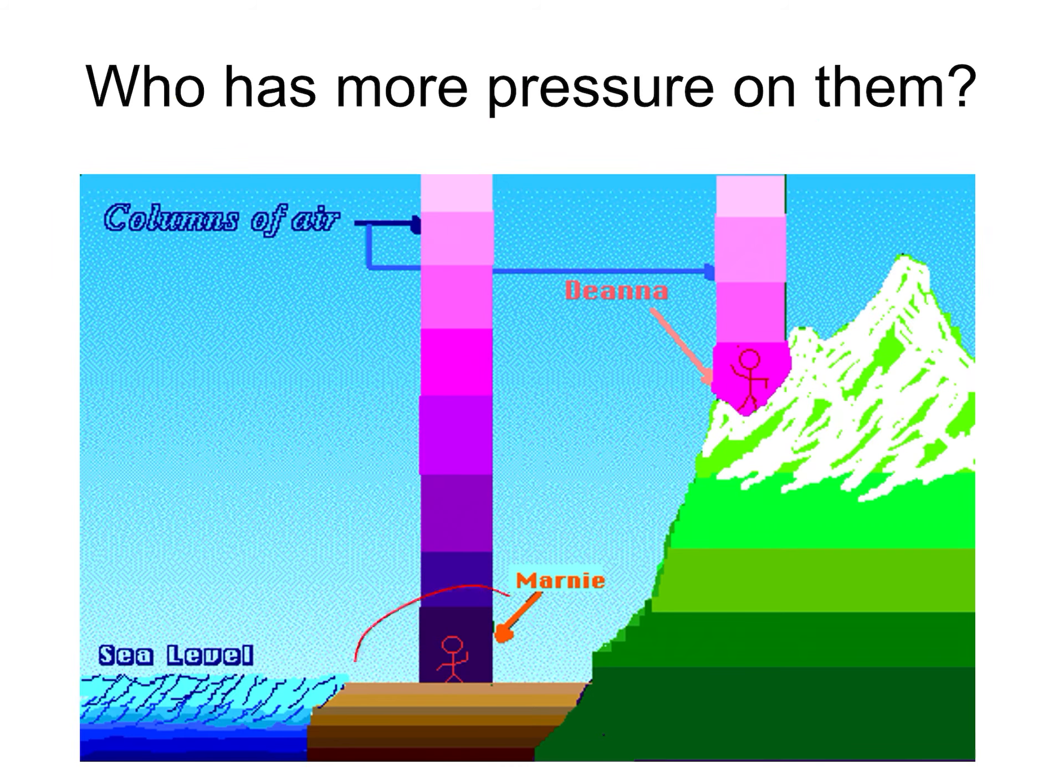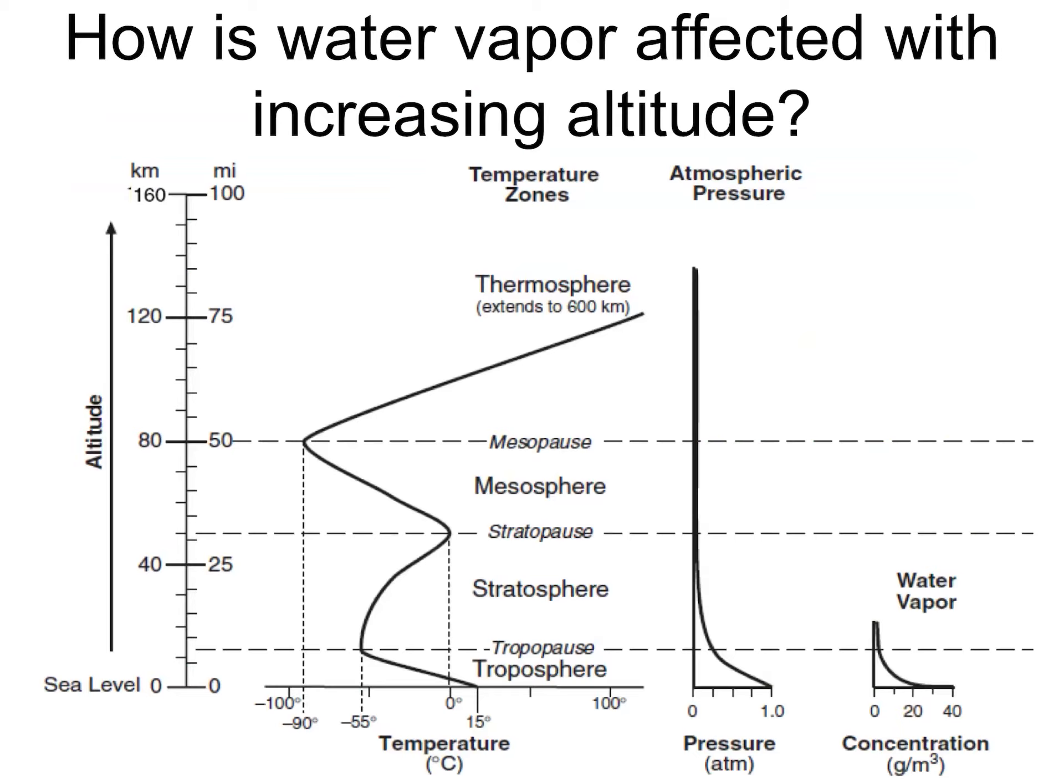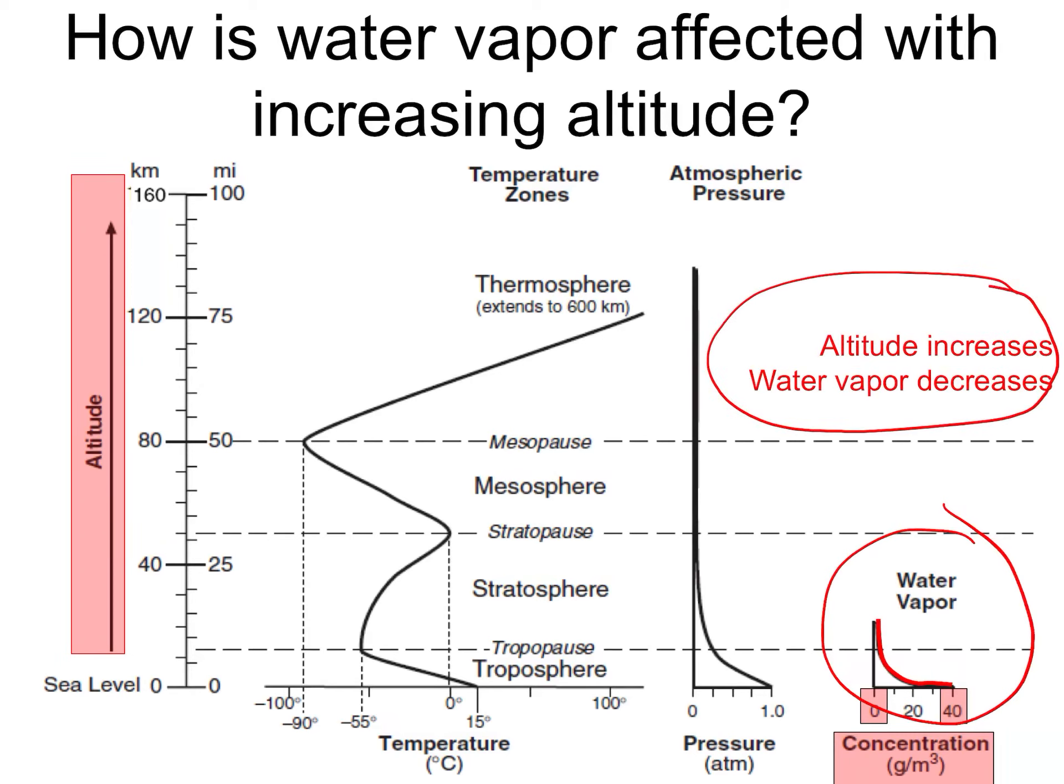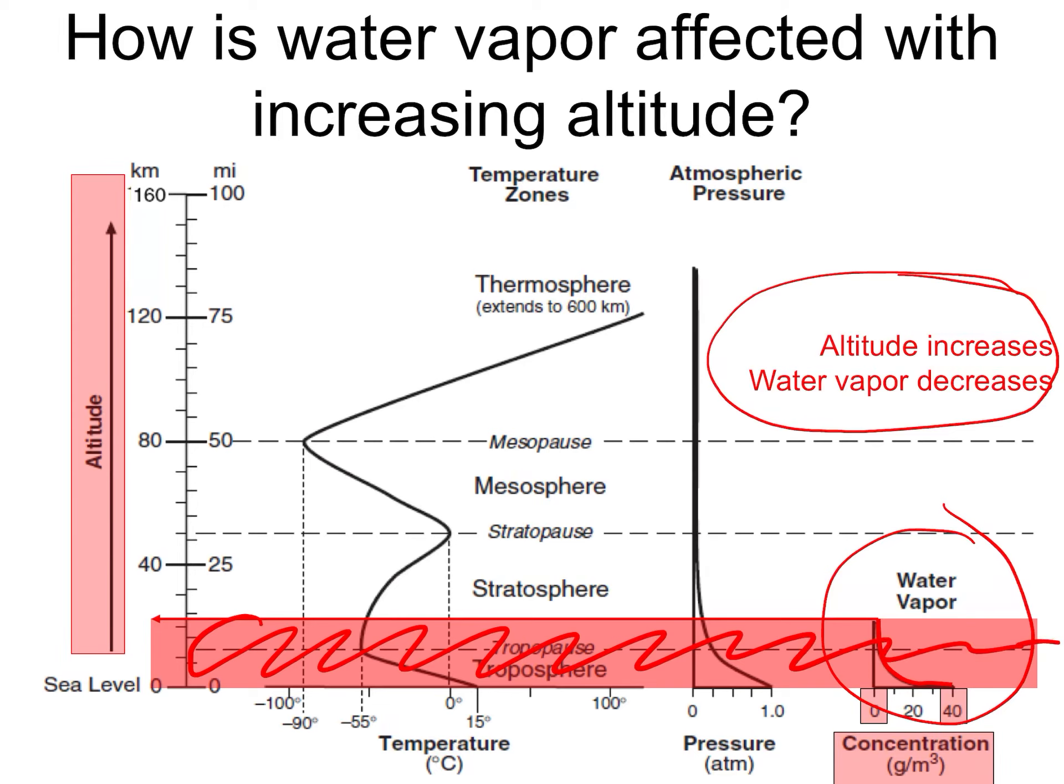So here, who has the most air pressure on them? This person because they have the most air. How is water vapor affected with increasing altitude? Same deal. As you go up there is less water vapor. Notice you go from zero to 40 and it gets less and less. Again, make sure that you understand that relationship. Notice weather only happens in this red zone right here, basically in the troposphere. Troposphere is the only layer that has water in it, so therefore it's the only layer that has weather in it.